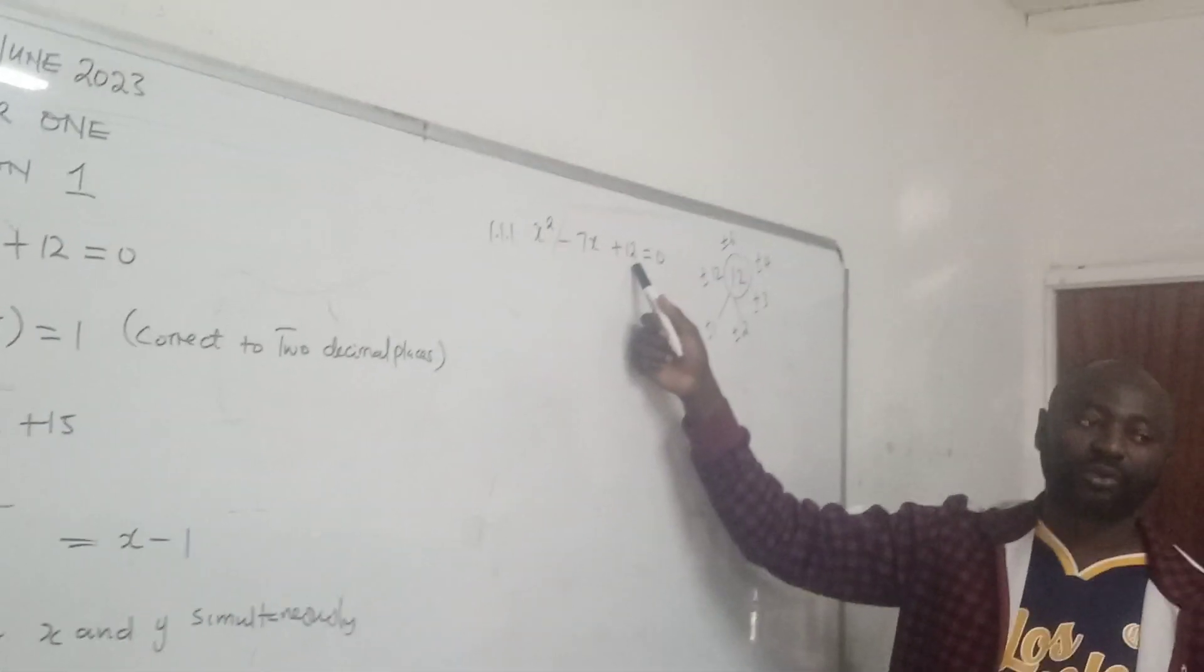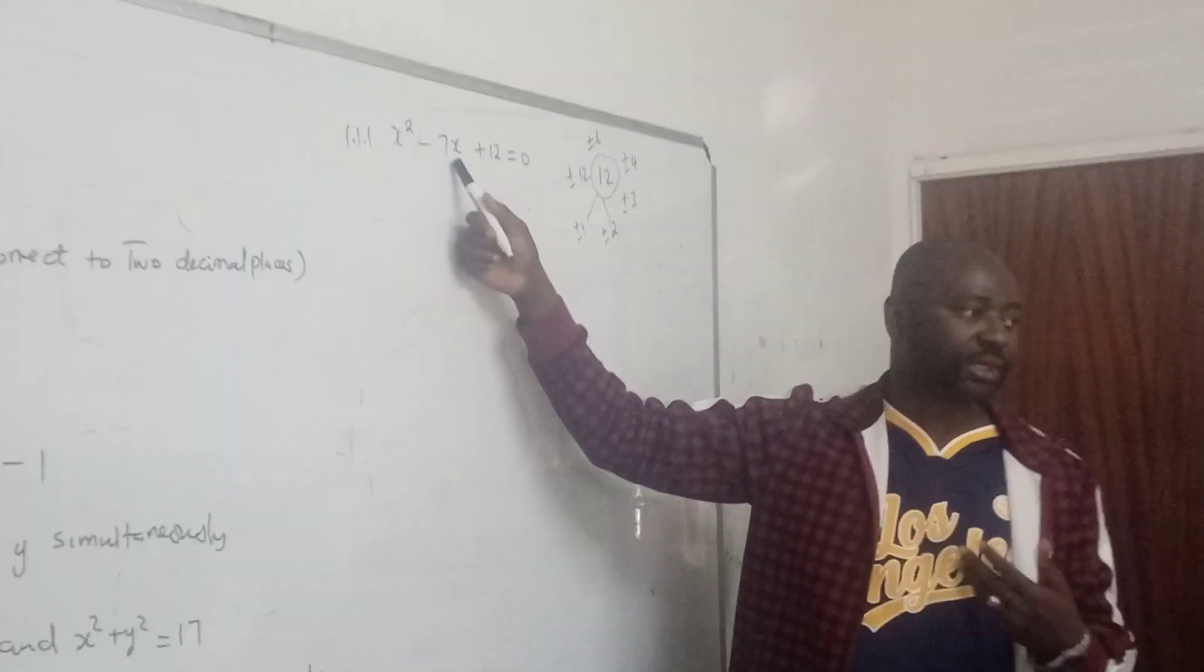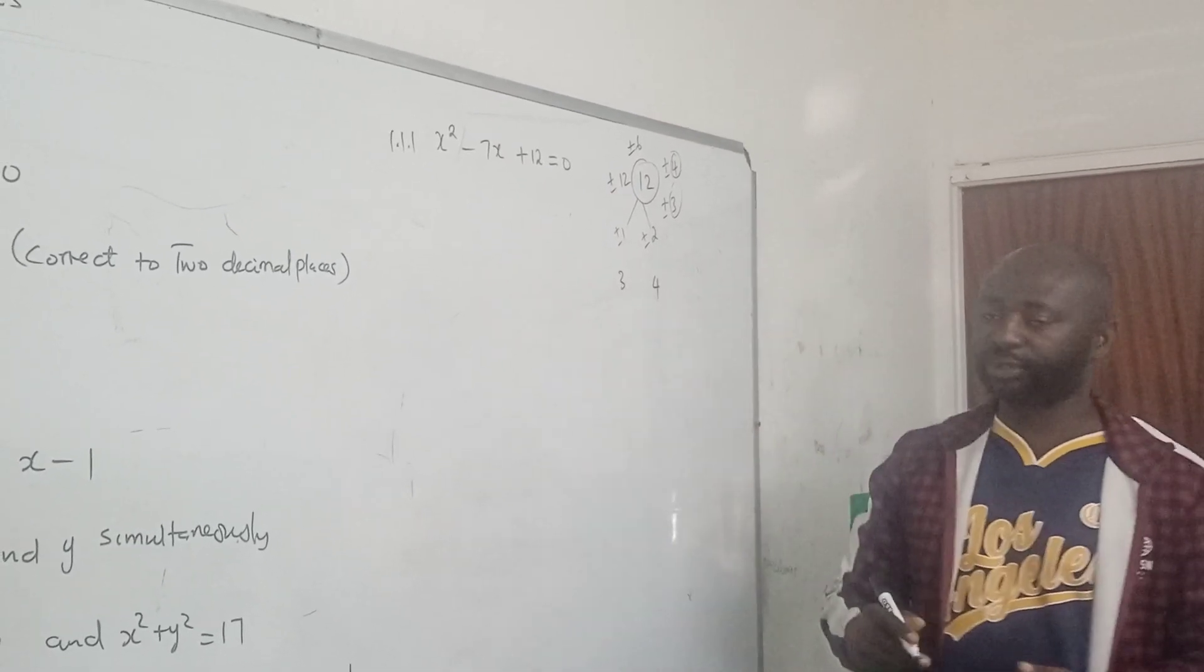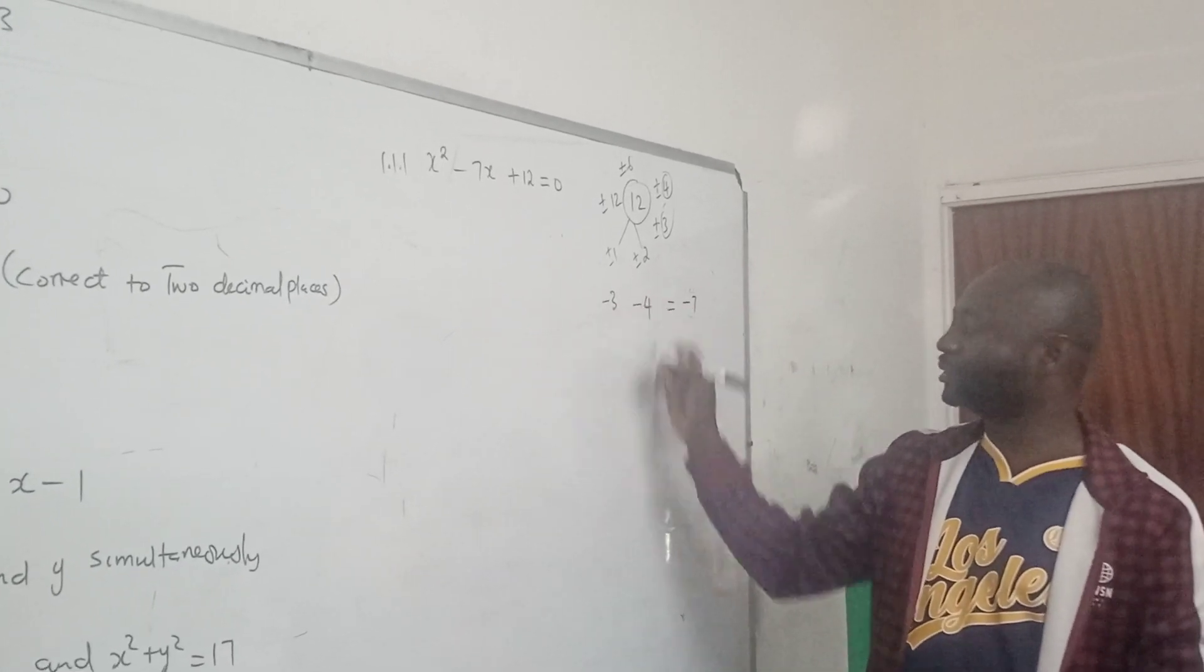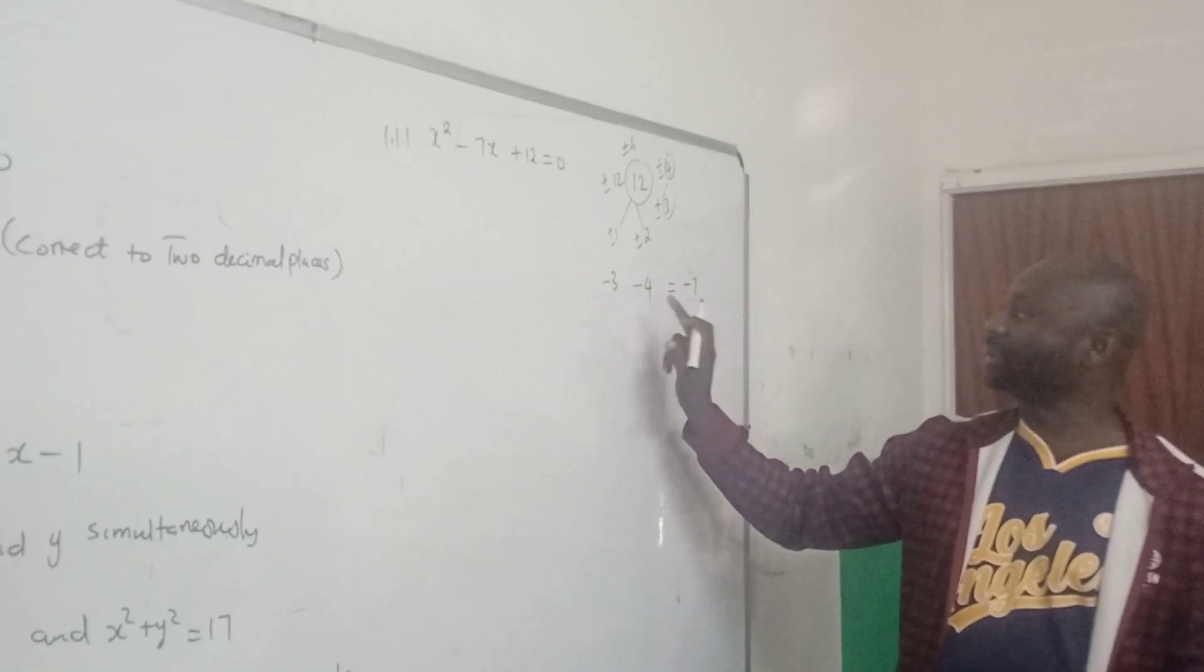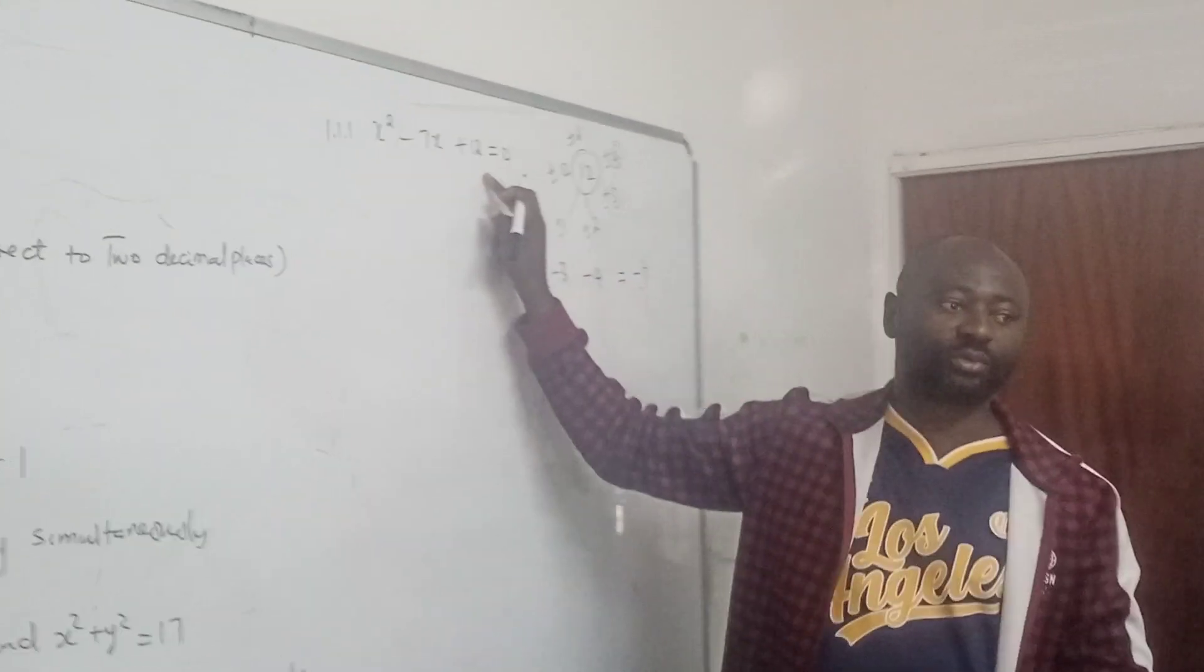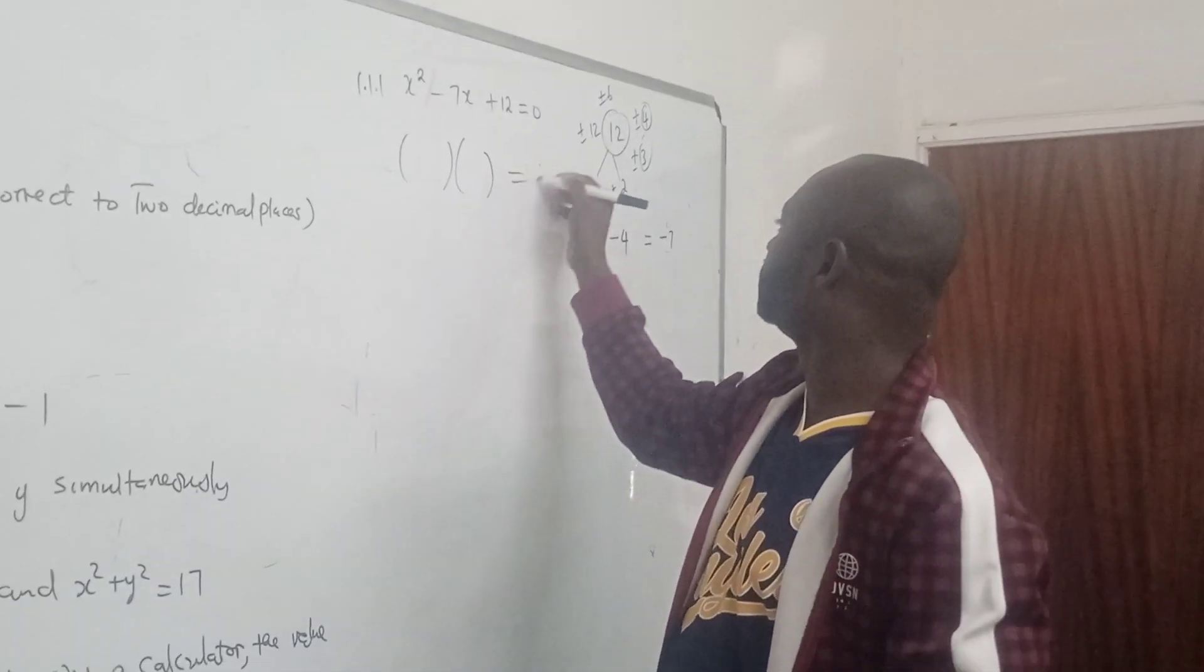Take two of them to form 12 when you multiply and also to form minus 7 when you add the two. We consider 3 and 4 can bring 7. So we have 3 and 4 that can bring 7, but we need minus 7, so it means both of them must be negative.